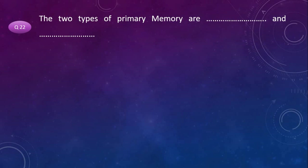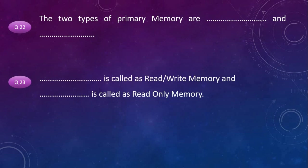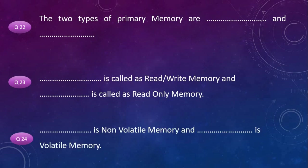The two types of primary memory are RAM and ROM. RAM is called read-write memory and ROM is called read-only memory. ROM is non-volatile memory and RAM is volatile memory.